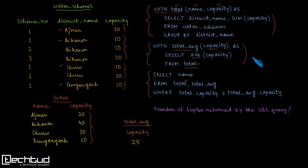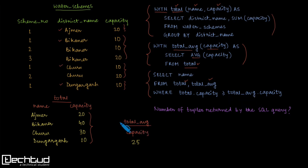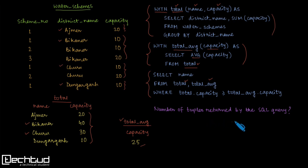The final query selects the name from the two intermediate tables 'total' and 'total_average', with the condition that the capacity in 'total' is greater than or equal to the capacity from 'total_average', which is 25. Only those rows where capacity ≥ 25 are selected — that gives us the second and third rows. So the number of tuples returned by this SQL query is two.